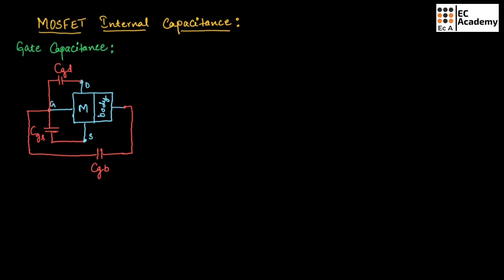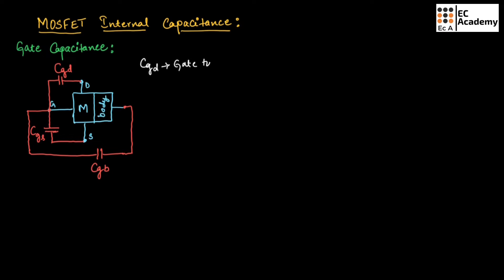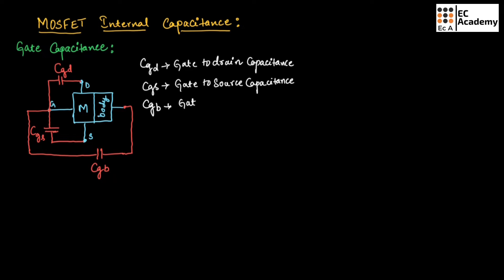Due to these junctions, three capacitances will be produced: CGD, which is gate-to-drain capacitance; CGS, which is gate-to-source capacitance; and CGB, which is gate-to-body capacitance. These capacitances are known as gate capacitance or oxide capacitance.